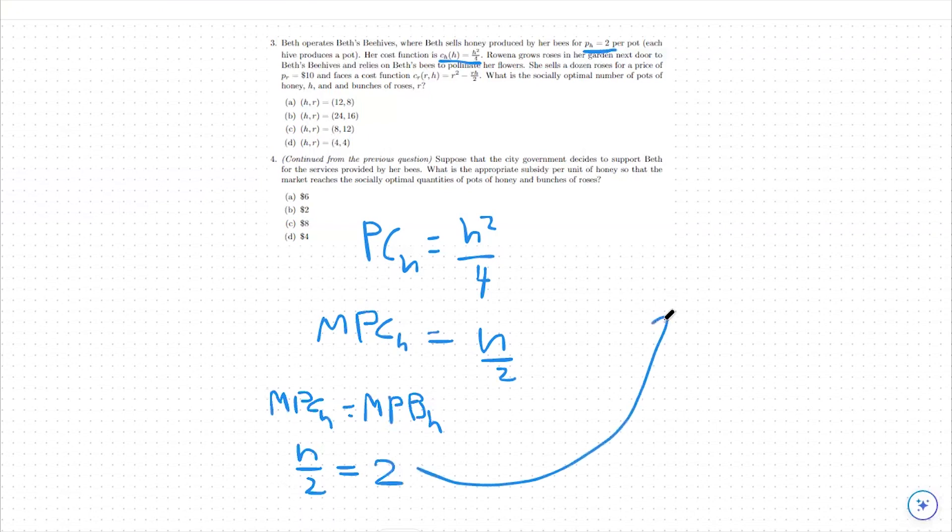What we also need to do, however, is implement some sort of subsidy to get us to our optimal level. How we do so is saying that 2 equals h over 2 but minus some amount of subsidy. So we're going to subtract out some subsidy from our cost. So our marginal private cost is here. We're going to subtract some subsidy from it.